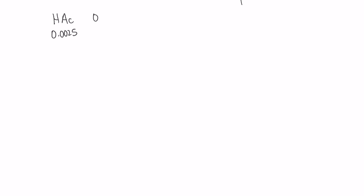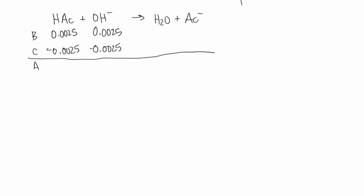Now we're going to do this again when we've added 20 milliliters of base. We're starting out with our acetic acid — 0.0025 moles. We've got OH⁻, and this time we're adding the same number of moles. Again, because this is a weak acid and a strong base, it's going to react stoichiometrically. We'll use our BCA table with moles and get water and acetate ion as products. We actually have equal quantities of acid and base here, so they both react completely, driven forward by the strong base, and we'll end up with just acetate ion at the end of this reaction.